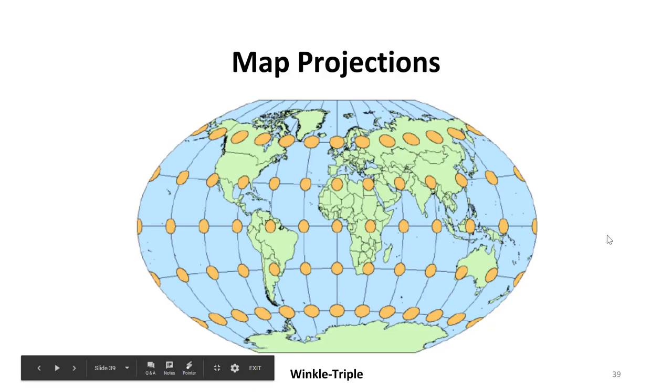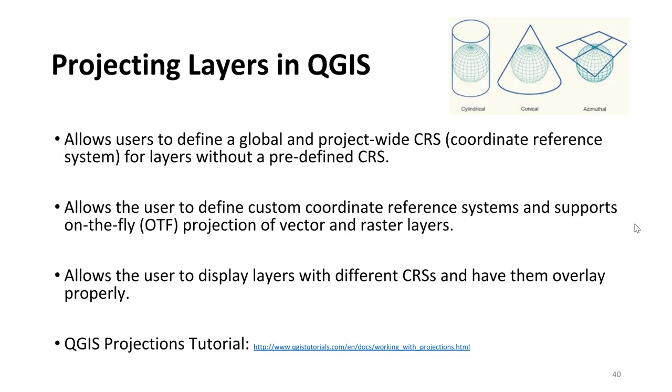Projecting layers in QGIS allows users to define a global and project-wide CRS, or coordinate reference system, for layers without a predefined coordinate reference system. QGIS also allows users to define custom coordinate reference systems. It supports on-the-fly projection of vector and raster layers. Even if you have two different layers that are of different projections, it'll still align those two layers in QGIS because you can project on the fly. This allows users to display layers with different coordinate reference systems and have them overlay properly. I've put a link to a QGIS projection tutorial here which you can follow after the lecture.